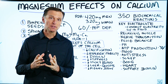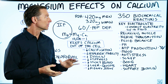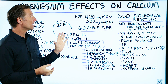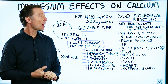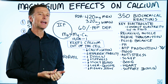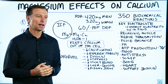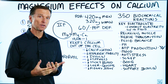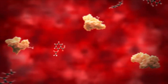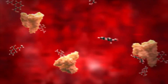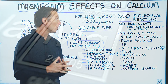We're going to talk about magnesium's effect on calcium, but let's first talk about what magnesium does. It's involved in over 350 biochemical reactions. It's a coenzyme, and that means it's a helper mineral involved in enzyme reactions, which are like the protein machines in the body that do all the work.